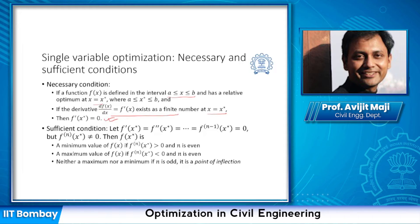The slope being zero indicates a potential critical point, however, as indicated, it does not say whether the point is going to be a maxima, minima, or inflection point. For that reason, we need to look into the sufficient condition, where we perform consecutive derivatives until we reach a non-zero value.